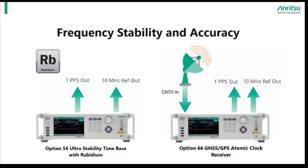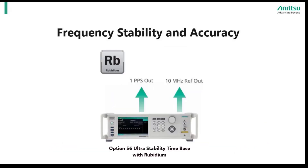Option 56, Ultra Stable Timebase with Rubidium, and Option 66, GNSS GPS Atomic Clock Receiver. We can start with Option 56, Ultra Stability Timebase with Rubidium.